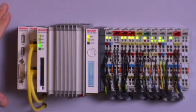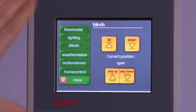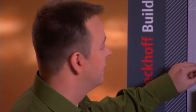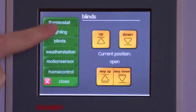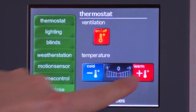All of these devices are controlled by this CX1020 embedded PC and this CP6608 touch panel. It allows me to control everything like the temperature in the room simply by clicking on the thermostat button and then either raising or lowering the temperature.